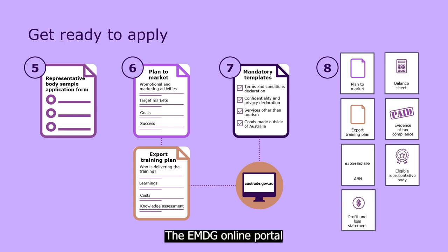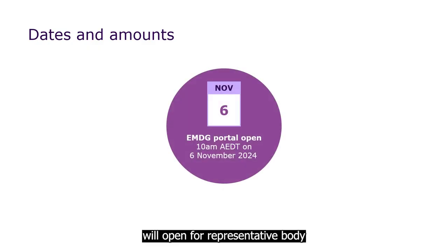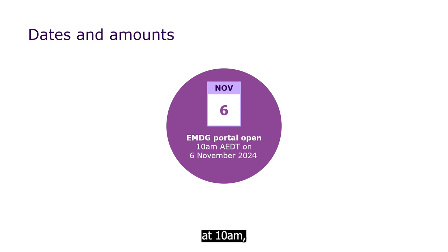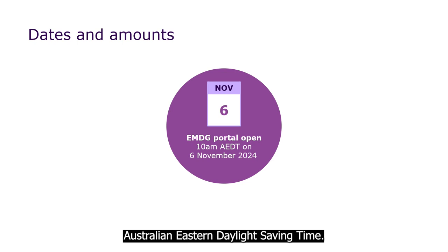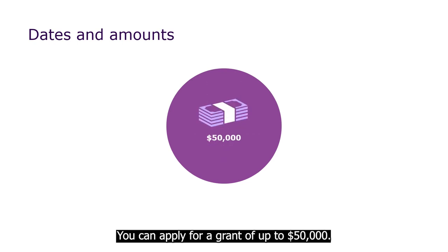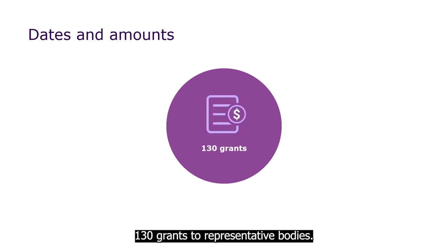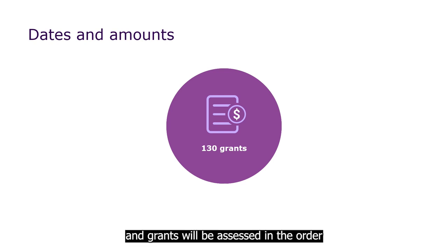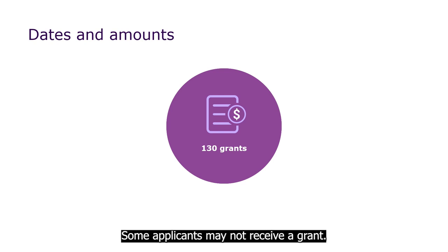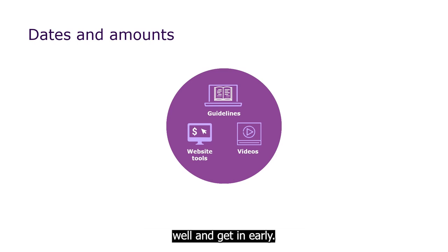The EMDG online portal will open for representative body applications on Wednesday, November 6, 2024, at 10am Australian Eastern Daylight Saving Time. You can apply for a grant of up to $50,000. We expect to offer approximately 130 grants to representative bodies. Austrade treats every applicant equally, and grants will be assessed in the order they are received. Some applicants may not receive a grant, so our best advice is to prepare well and get in early.